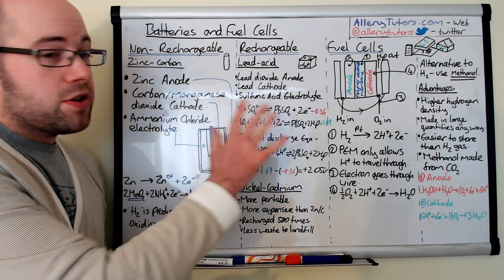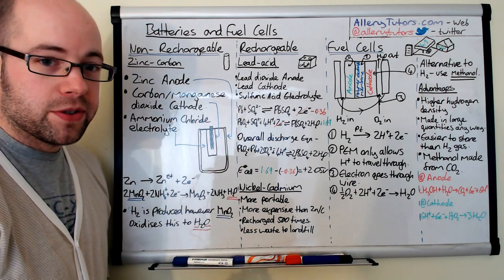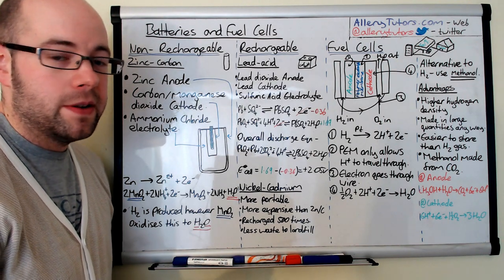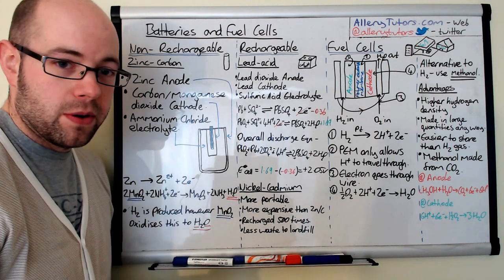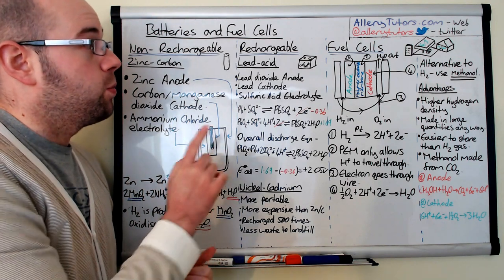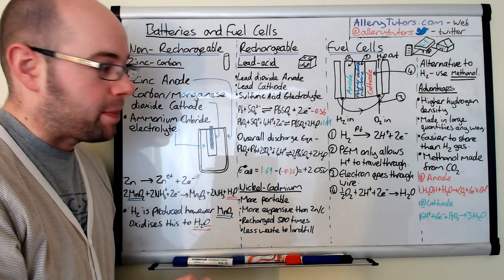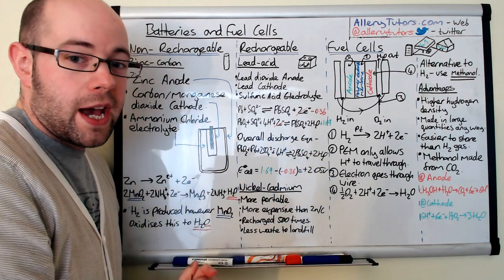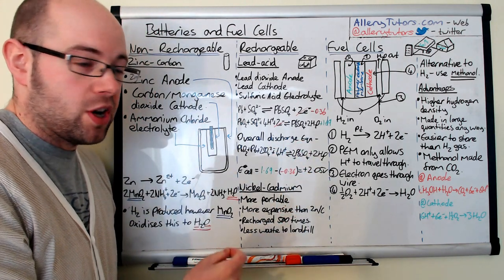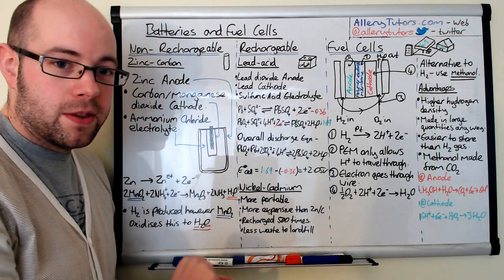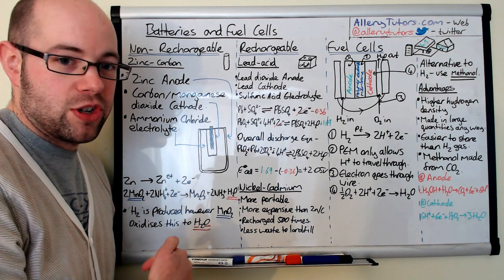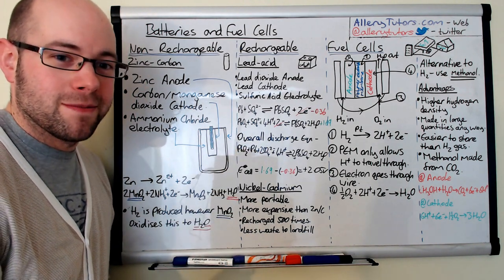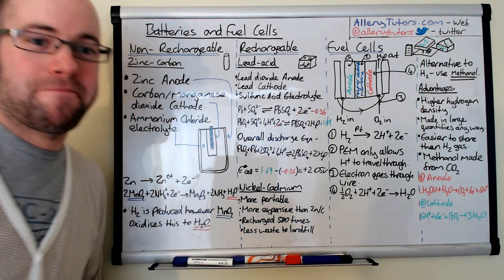So those are all the different types of batteries and fuel cells. Remember the equations and make sure you can apply them — for example, working out E⁰ of the cell. One final point: the equations shown are for discharge. For rechargeable batteries, to recharge the battery you simply reverse the equation. As long as you can remember that, you should be fine. That's it — bye!